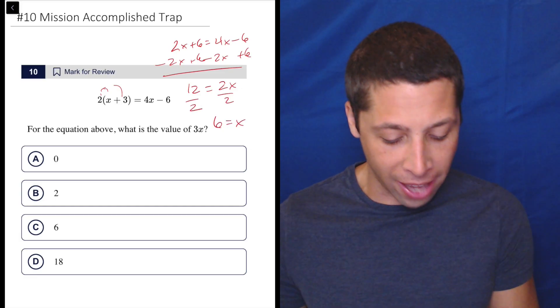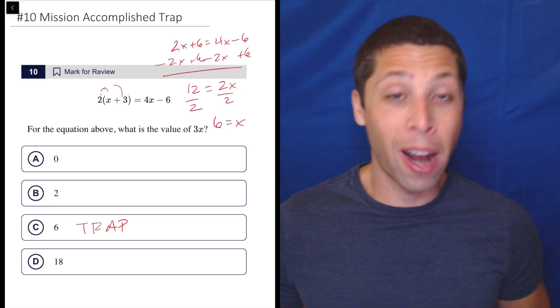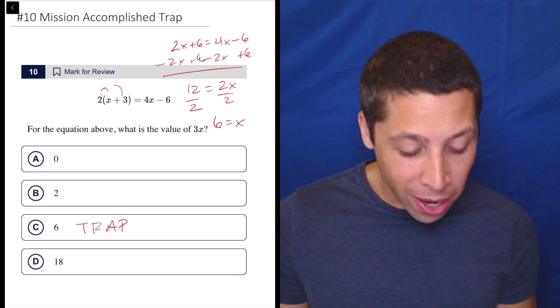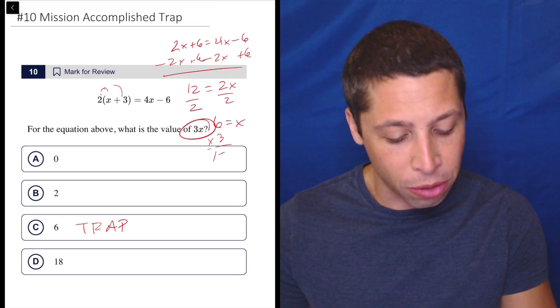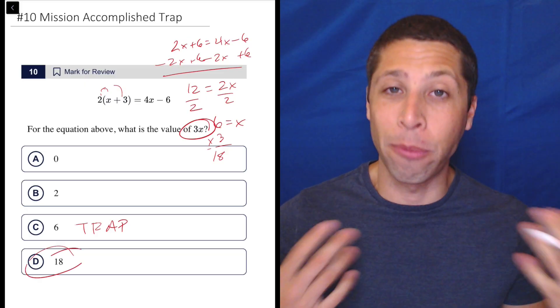We get 6 is equal to x. And that is our trap. Why is that a trap? Well, they didn't want x. They wanted 3x, which is nice and easy to get. You just multiply by 3. We get 18 and we're done.